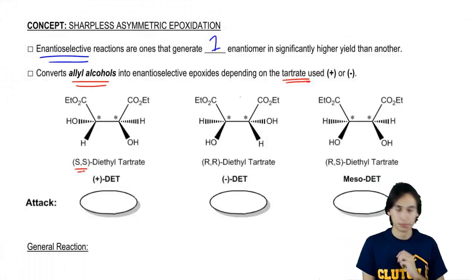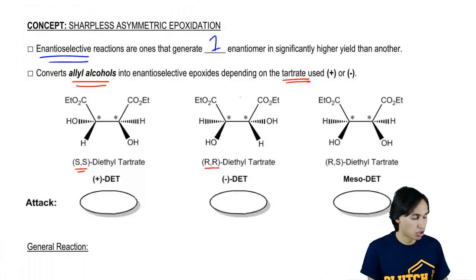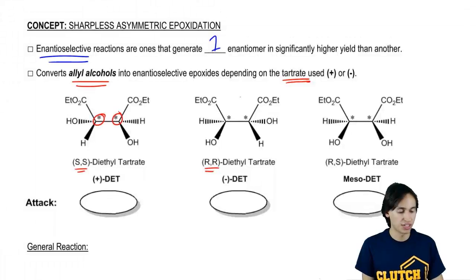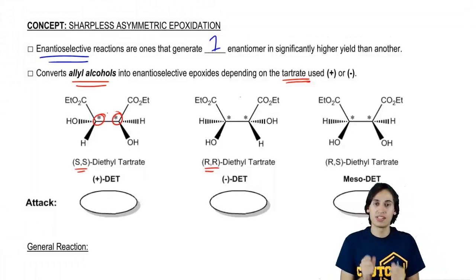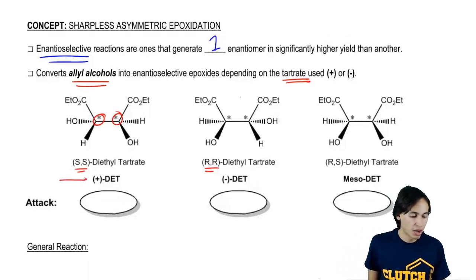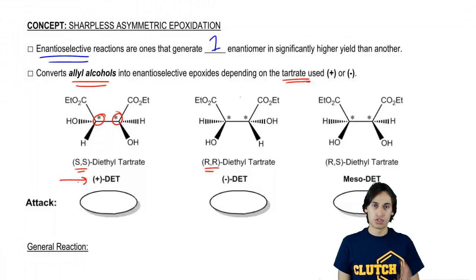I could use the SS. I could use the RR. We're talking about these chiral centers right here. So if both of them are S, that's considered a positive tartrate.